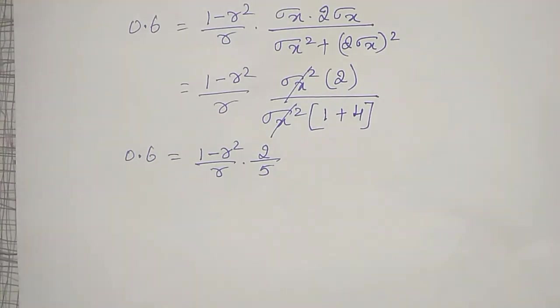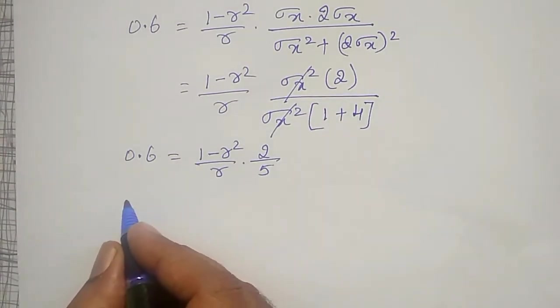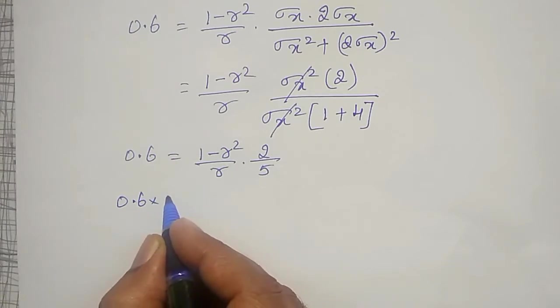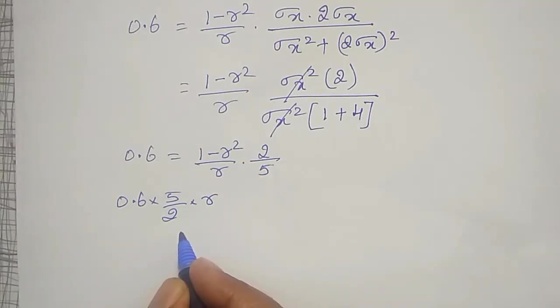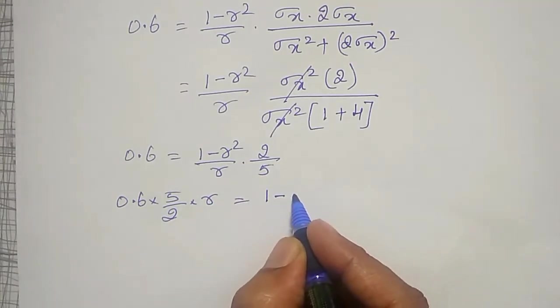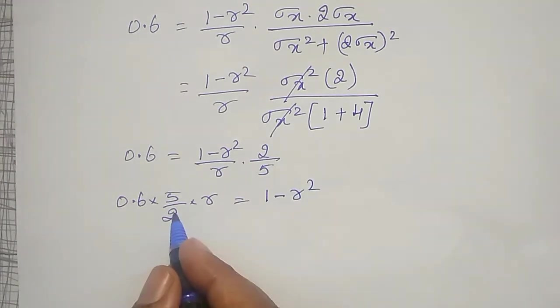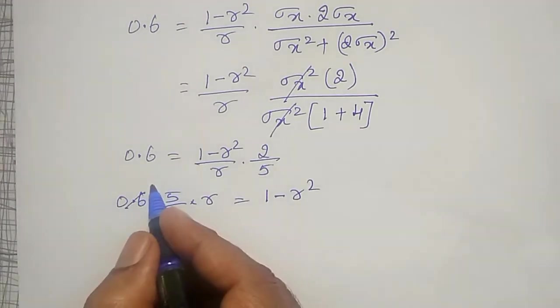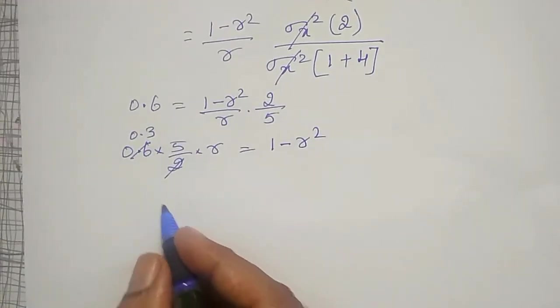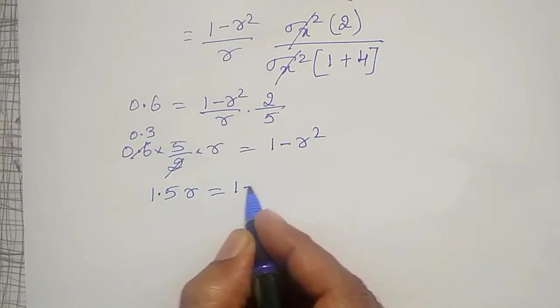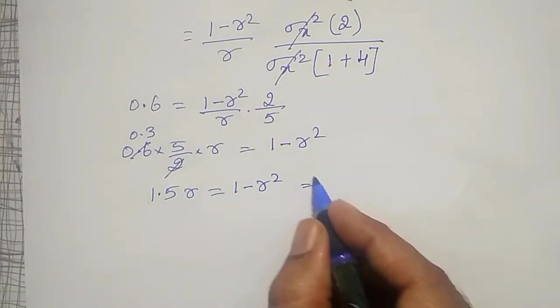To solve this quadratic equation, 2 by 5 I will shift to the other side. 0.6 into 5 by 2 into r equal to 1 minus r square. That will become 0.3 into 5, which is 1.5 times r equal to 1 minus r square. Or, r square plus 1.5 r minus 1 equal to 0.